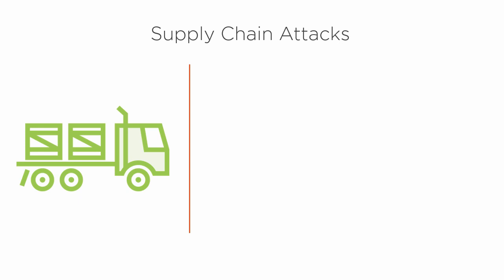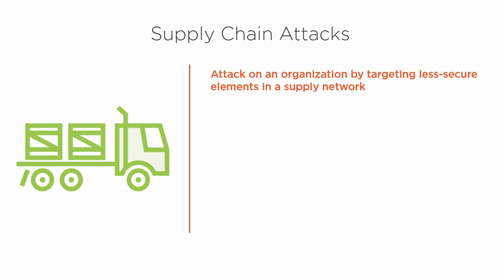A big one that many people may not be aware of is supply chain attacks. A supply chain attack is an attack on an organization by targeting less secure elements in a supply network. Much like watering hole attacks, where an attacker might figure out that executives of a company visit a certain site — maybe they like golfing or fishing. Their company is too secure, so we attack the fishing or golfing website, and when they visit, we catch them through the side door.